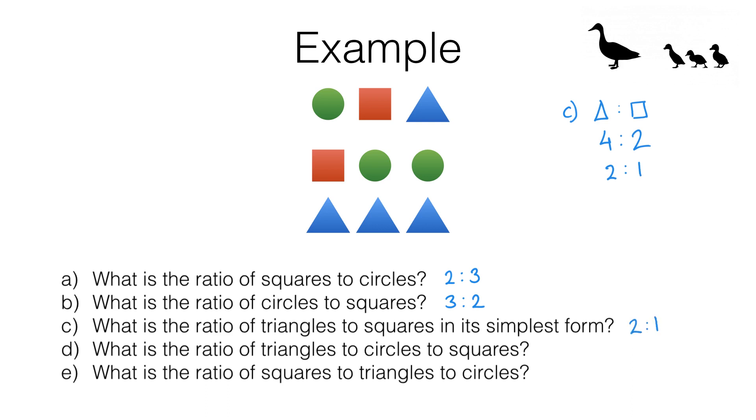In question D you might be seeing something you haven't seen before. This time we want a ratio of triangles to circles to squares. That's three quantities. So ratios don't just have to be between two quantities like in the previous questions.